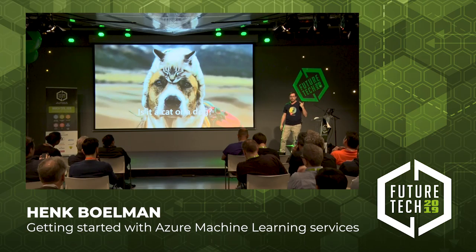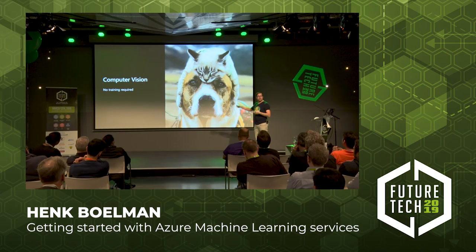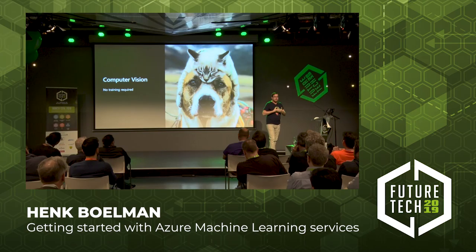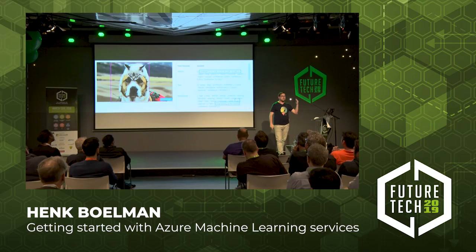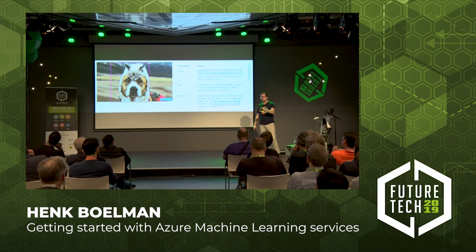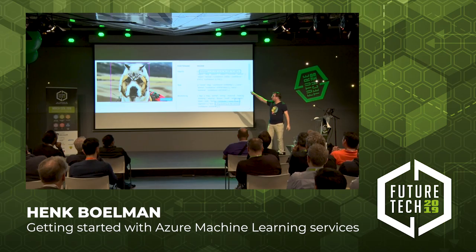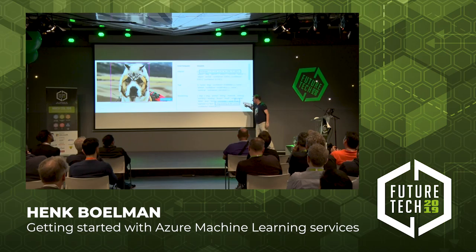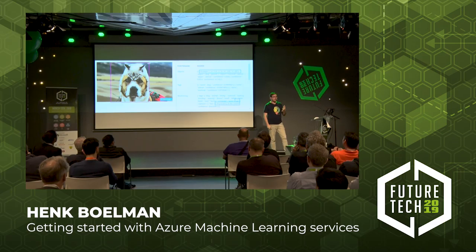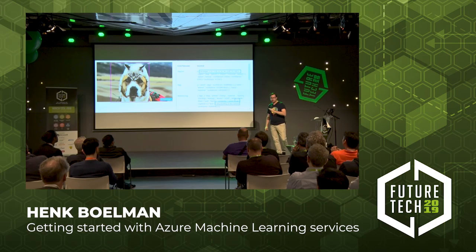So back to the important question: is it a cat or is it a dog? We can use the Computer Vision API to answer that question, and you don't actually need to train a model because this problem is already solved. If you send this image to the Computer Vision API — you can go to the Microsoft website and just click browse — you get back that this is actually a dog, it will tell you where the dog is, and it is even smart enough to see there is also a cat. It also gives a description: 'a dog looking at the camera.'